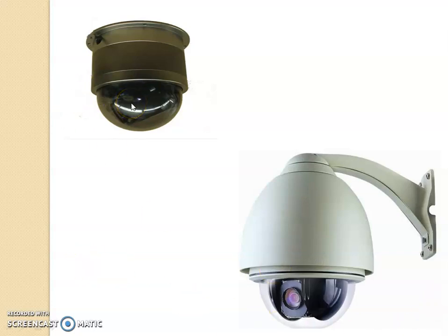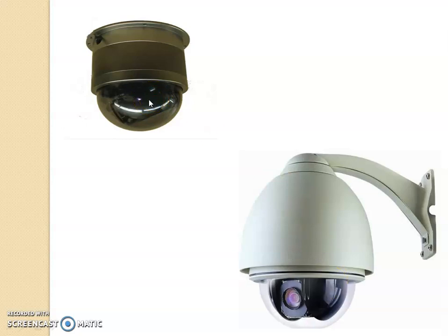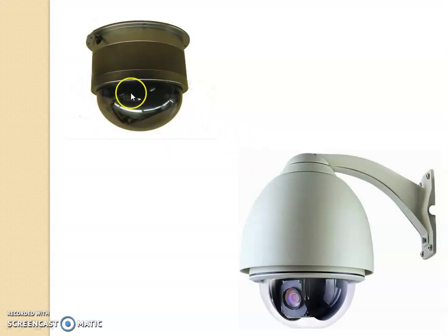The camera comes in either a transparent cover or an opaque cover. This opaqueness will prevent the intruder from making a judgement about whether the camera is looking towards them or not — in other words, the camera cannot be seen by the intruder at all.